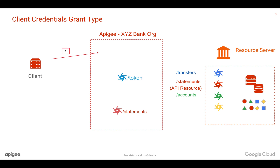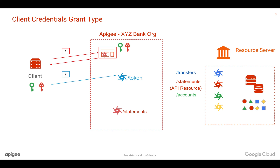In the first step, the client registers with the Apigee developer portal and requests access to the slash statements API. The Apigee developer portal talks to the Apigee Edge server using the management API and creates a consumer key and secret. That consumer key and secret is sent back to the client. The client now sends this consumer key and secret to the slash token endpoint in base64 encoded format. Apigee will verify the client key and secret, confirm it belongs to a valid client, and then generate a token which is sent back to the client.